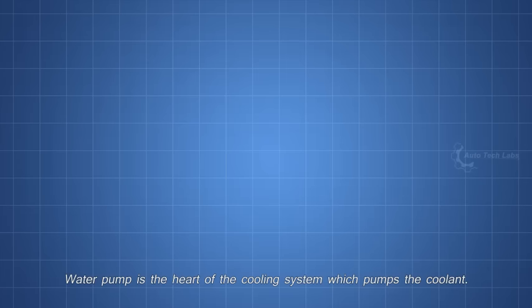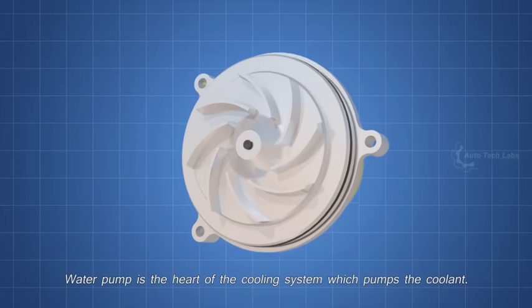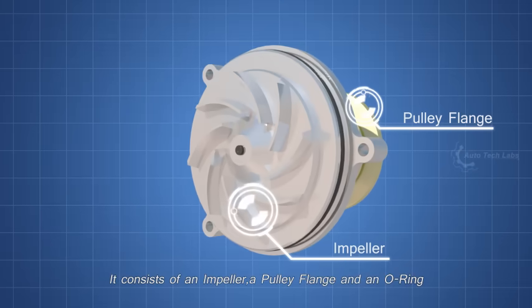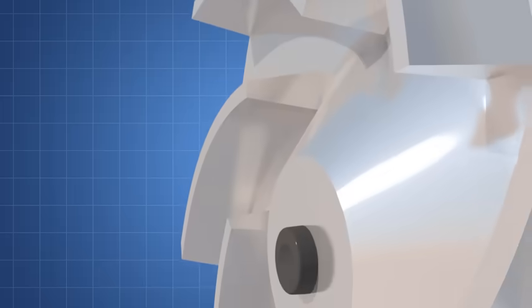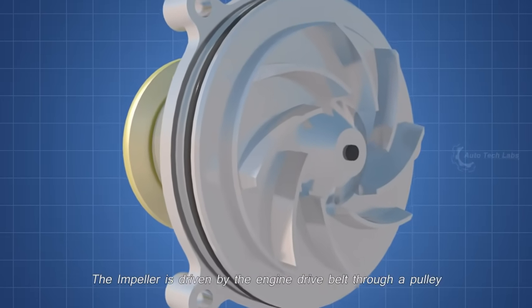First, the water pump. Water pump is the heart of the cooling system, which pumps the coolant. It consists of an impeller, a pulley flange, and a no-ring. The impeller is driven by the engine drive belt through a pulley.